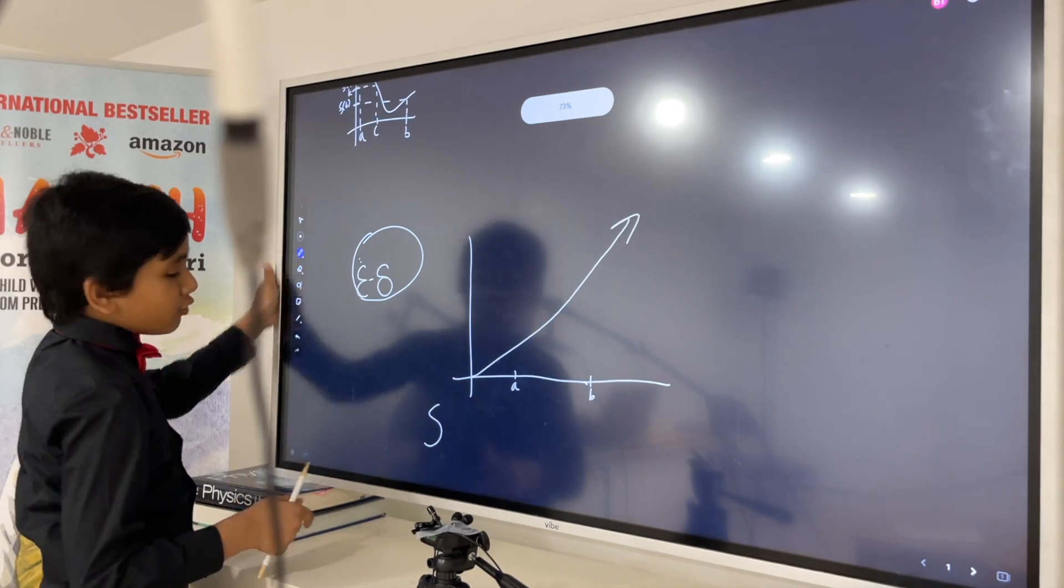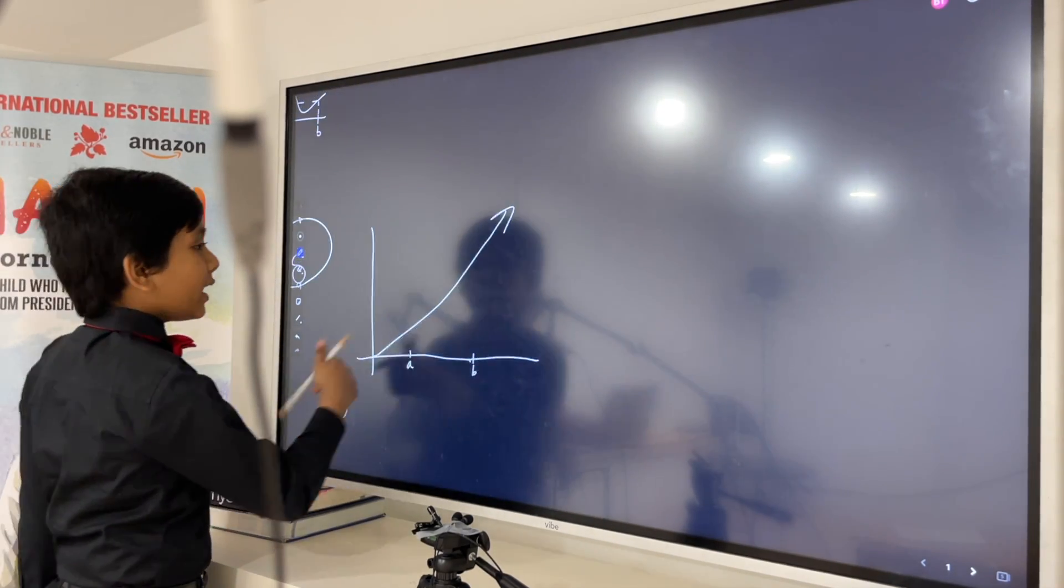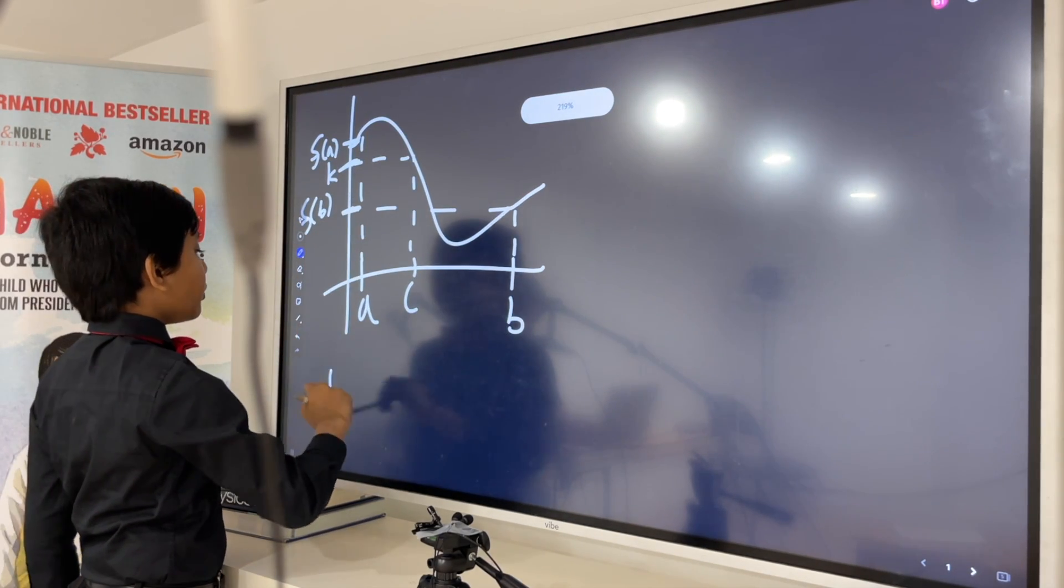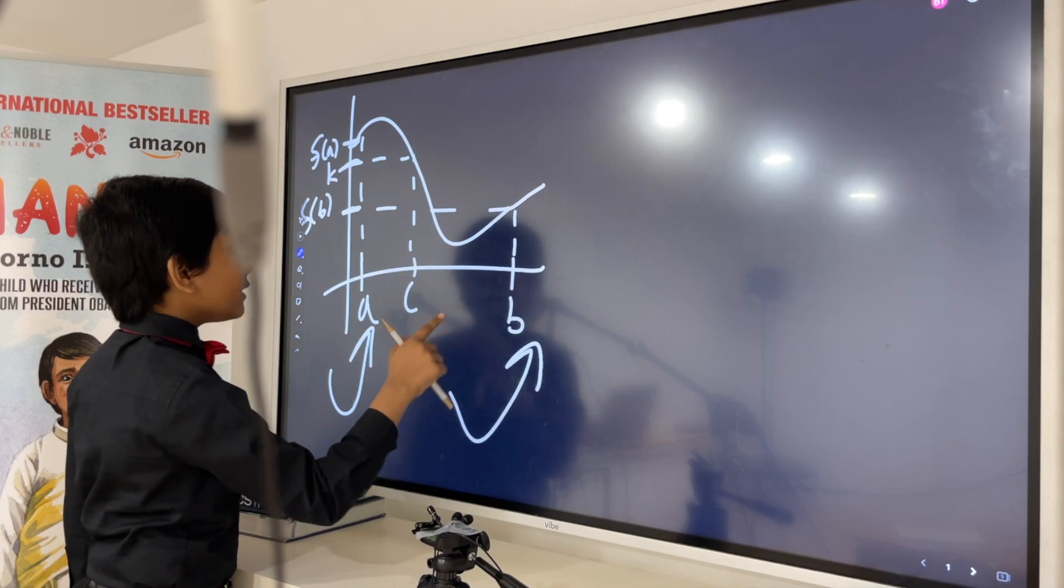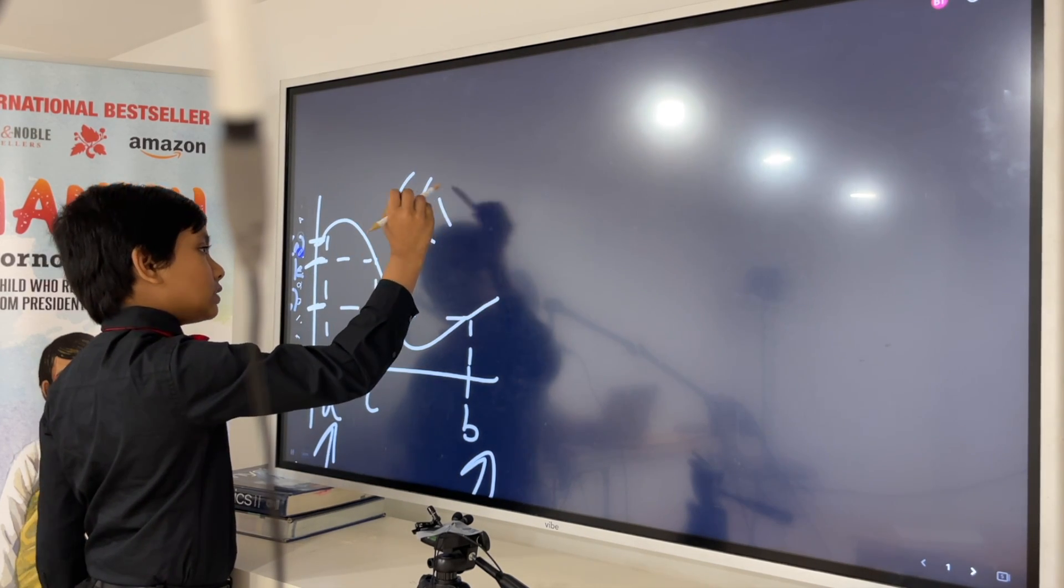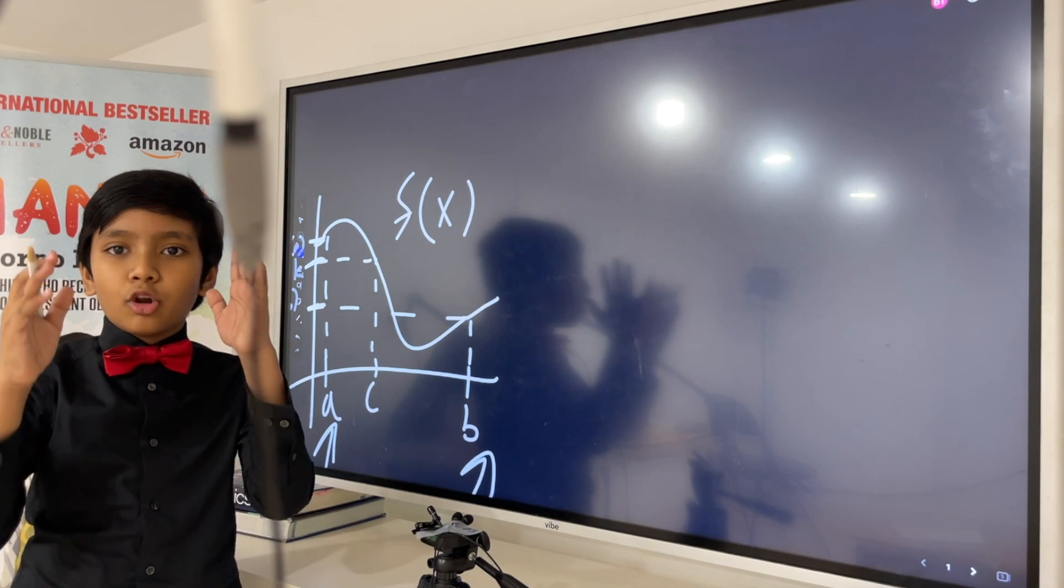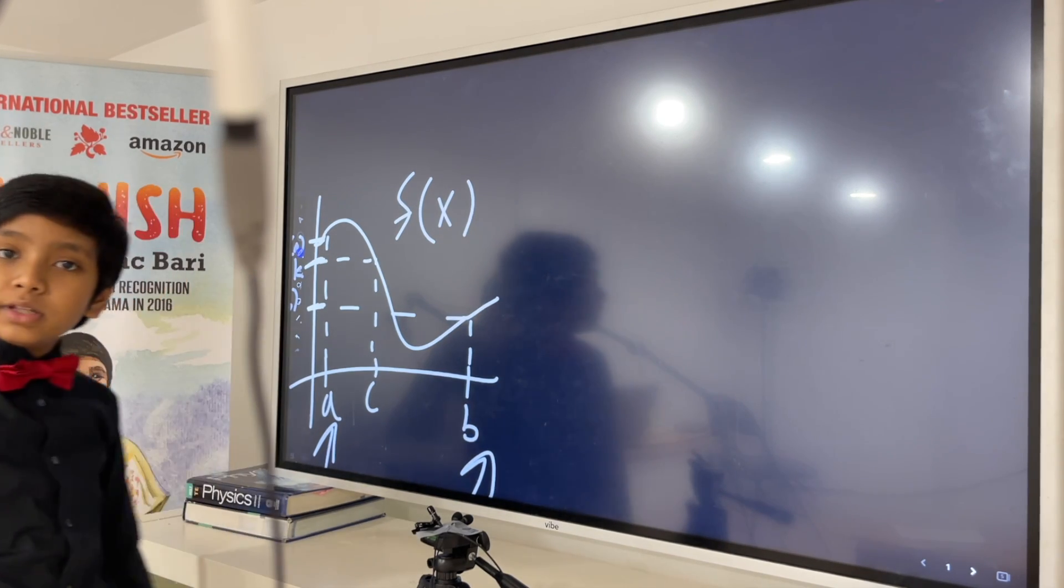So, for new viewers, we were talking about the Intermediate Value Theorem, which basically says you have a point A, you have a point B, you have a function F which is continuous between A and B. That means it has no breaks, no undefined points, nothing.